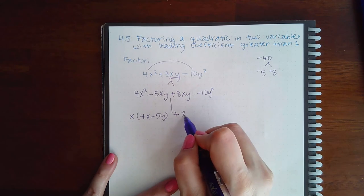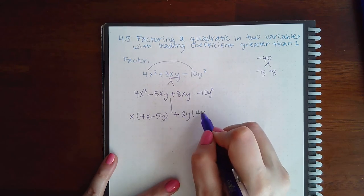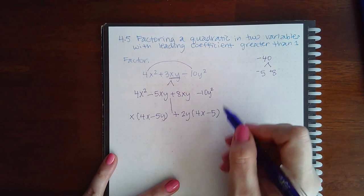These two have a 2 and a y in common, leaving me with 4x minus 5y.